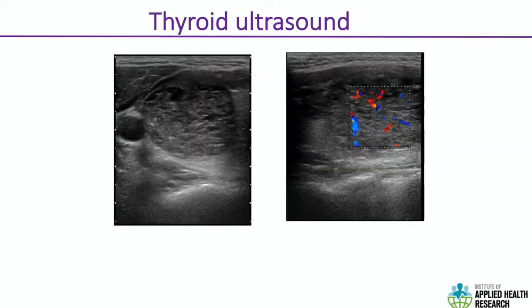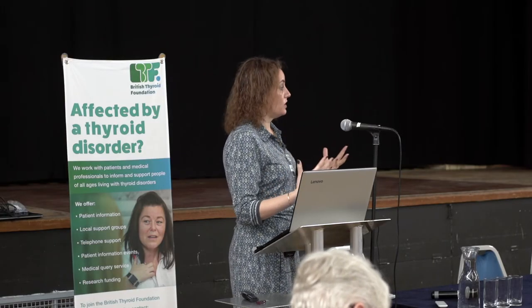This is what a thyroid ultrasound looks like. The nodule shown looks a little suspicious because it's lighter than the rest of the thyroid gland, has a few calcifications, and on the right image, the blood flow through that nodule is increased. These are among the reasons why we would be concerned about such a nodule.